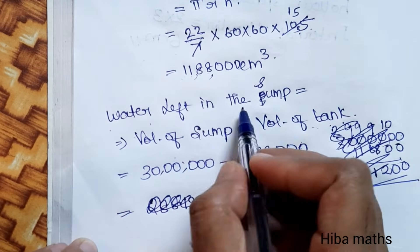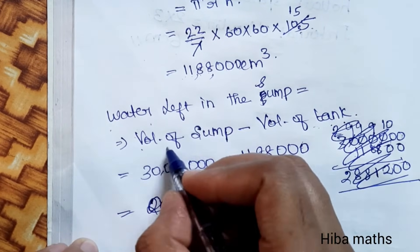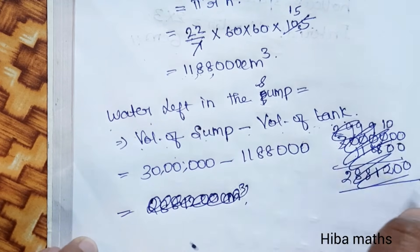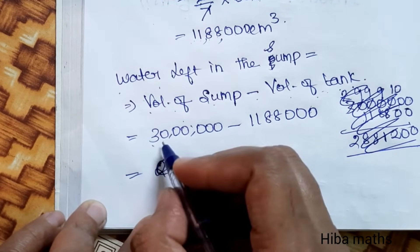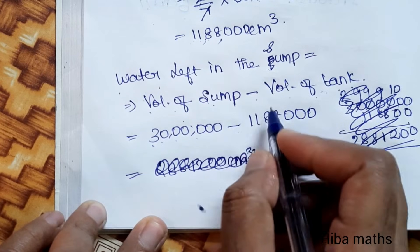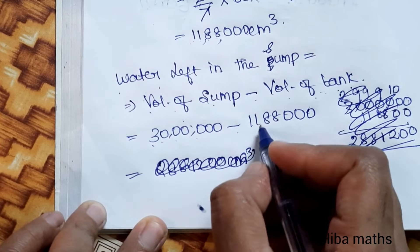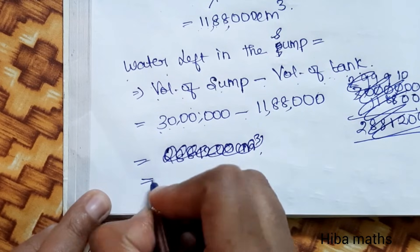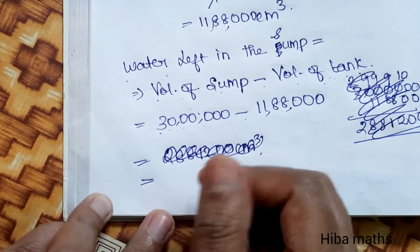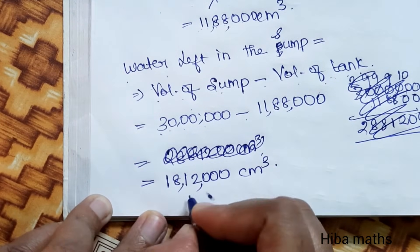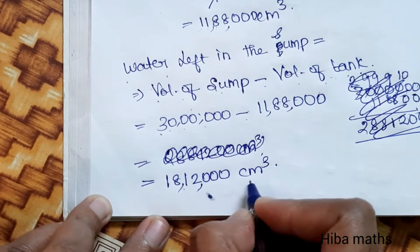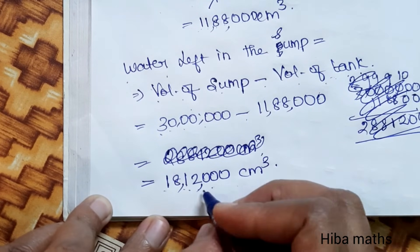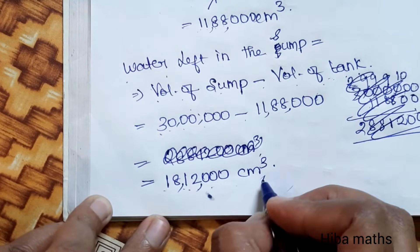Water left in the sump = Volume of sump minus volume of cylinder tank. That is 30,00,000 minus 11,88,000 = 18,12,000 cubic centimeters. The answer is 18,12,000 cm³.